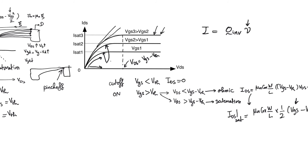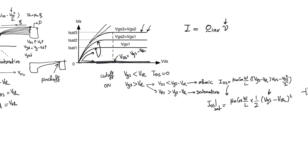The graph for the cut-off region is actually the x-axis, because current is zero regardless of the value of V_DS.